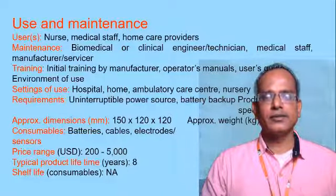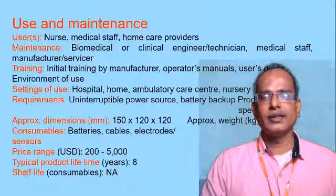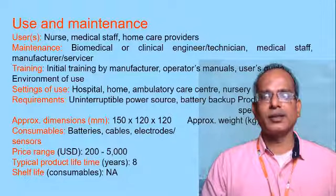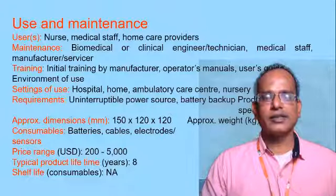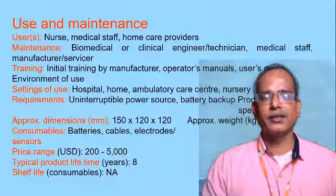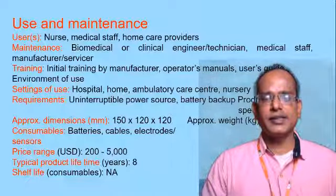Requirements include uninterruptable power sources and battery backup. Product specifications: approximate dimensions are 150 × 120 × 120 millimeters; weight is approximately 0.75 kilograms (750 grams). Consumables include batteries, cables, electrodes, and sensors. The price range is 200 to 5000 USD (1 USD equals approximately 74–76 rupees). Typical product life is 8 years; shelf life is not applicable.